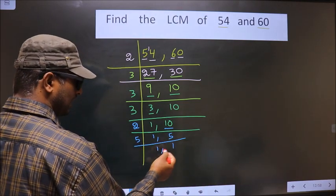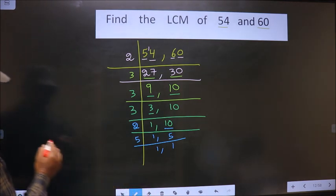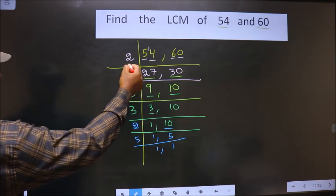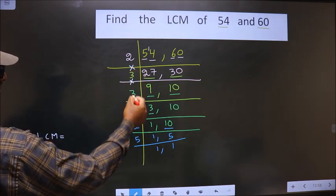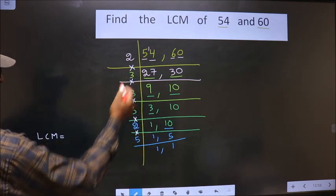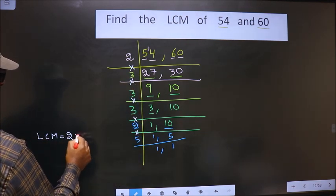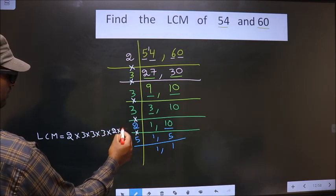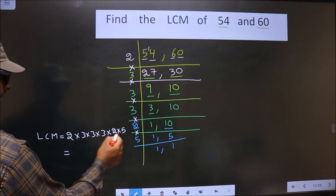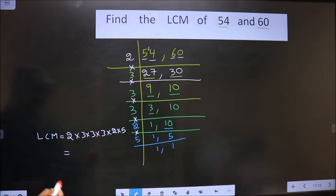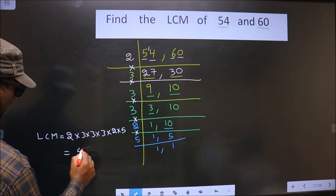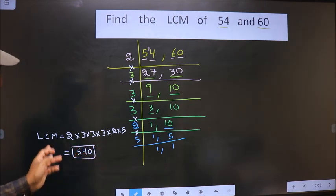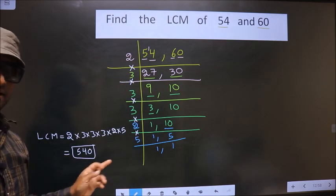Now we got 1 in both places. So now the LCM is the product of all these numbers — that is 2×3×3×3×2×5. You multiply all these numbers and you get 540. This is our answer. Am I clear?